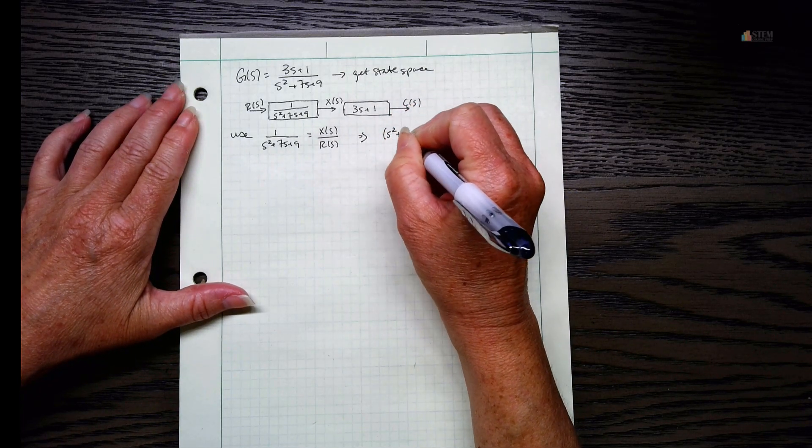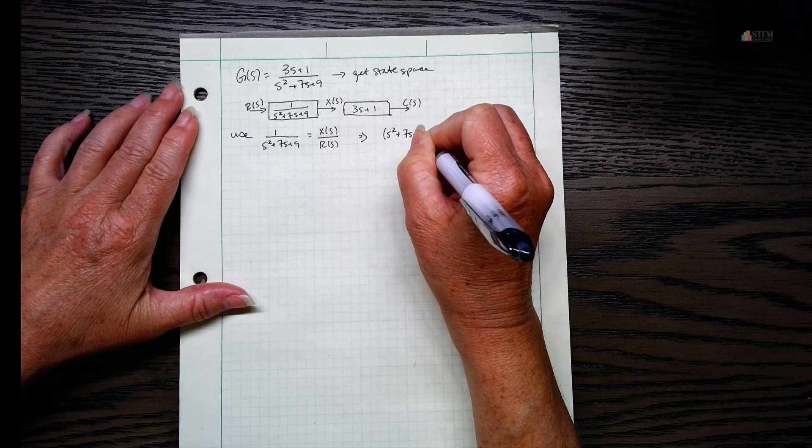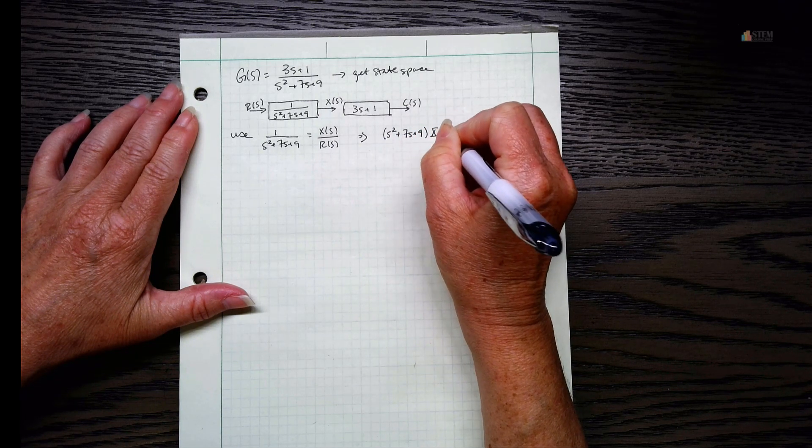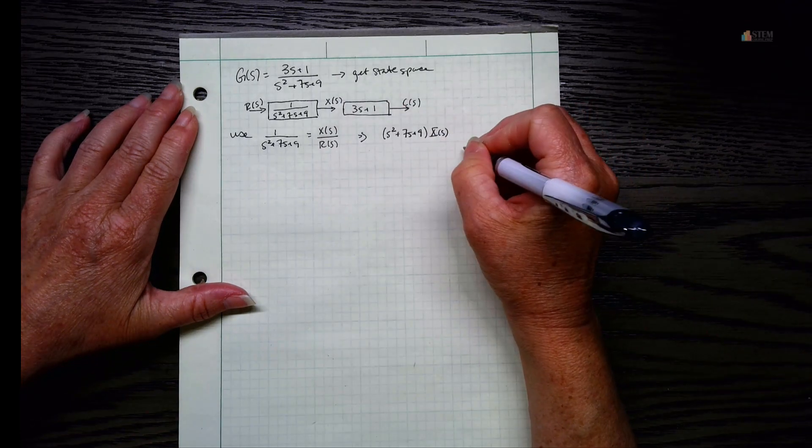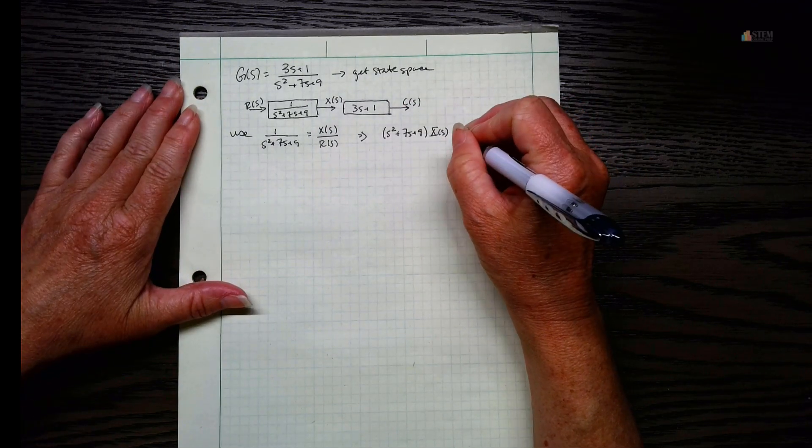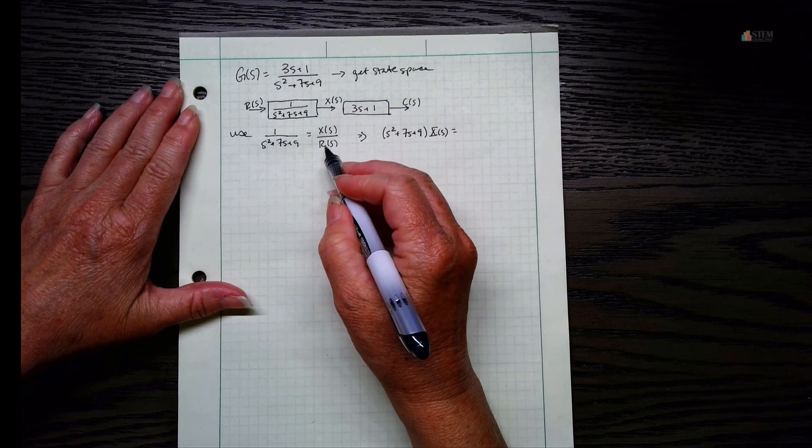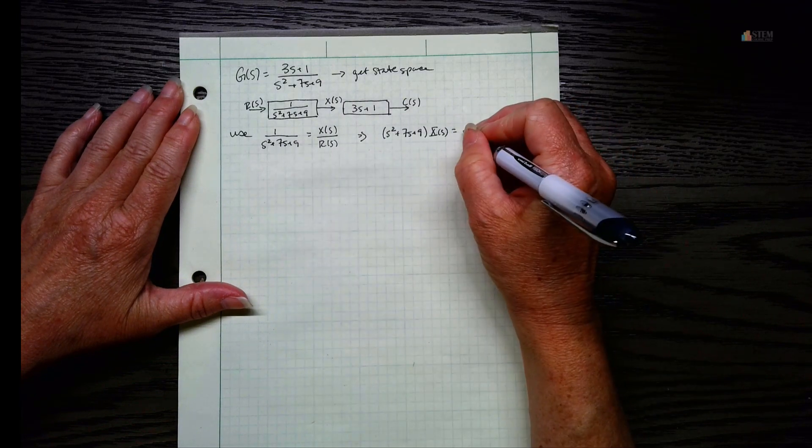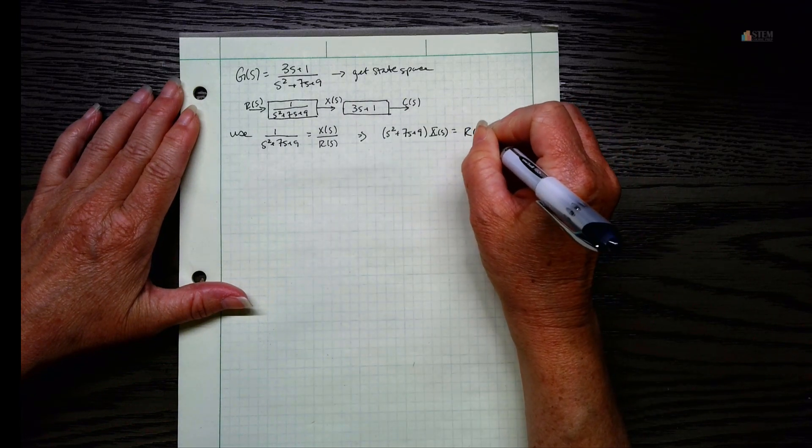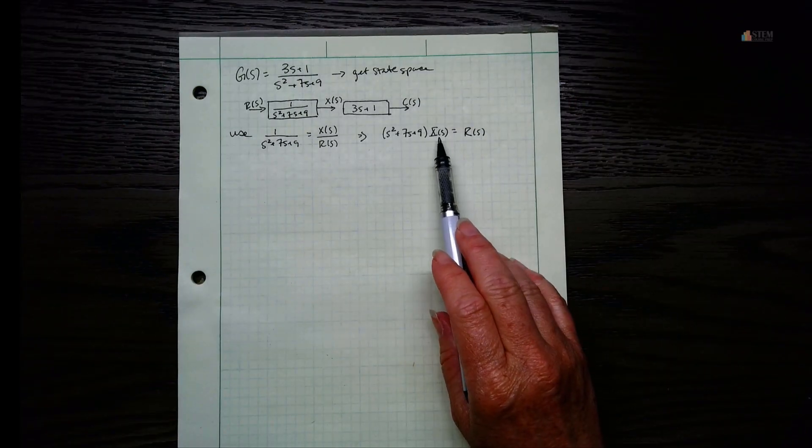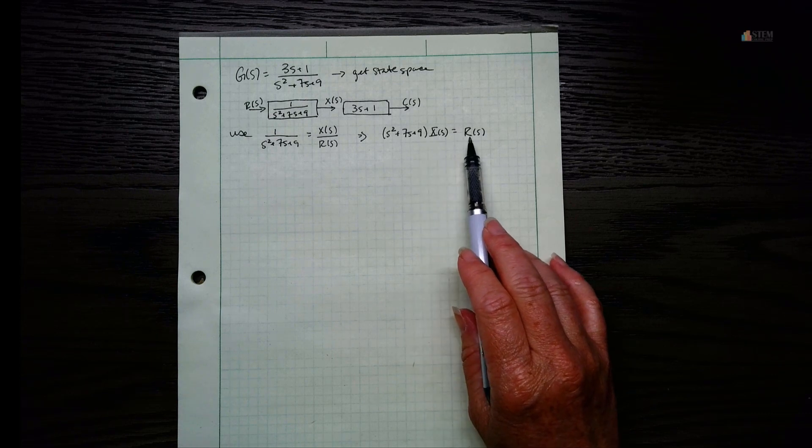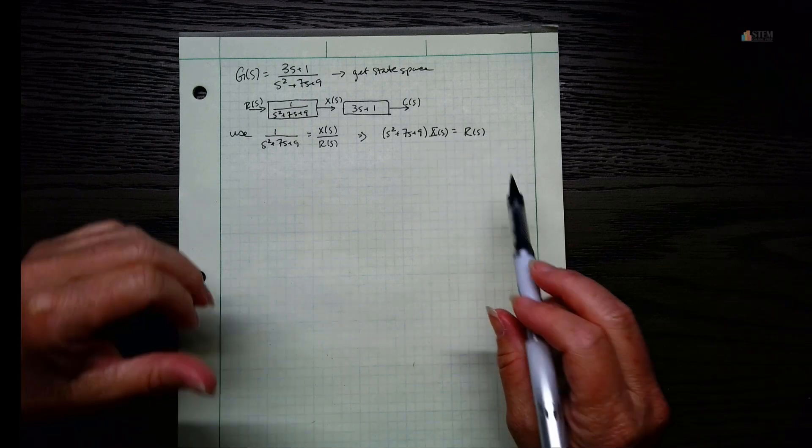So let's cross multiply. If we do that, let's have S squared plus seven S plus nine times X of S - and this X and this X are the same, I just put the bars on this one for some reason. And then let's multiply this one, the one times the R of S, so we just end up with R of S.